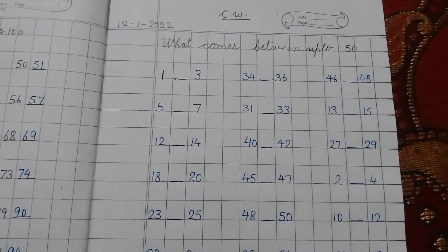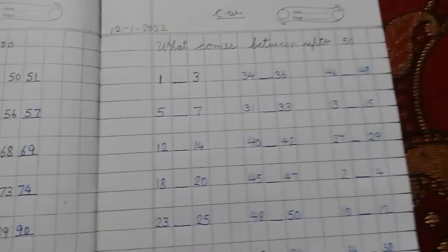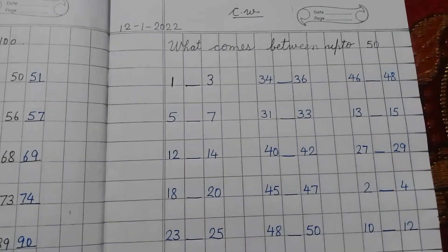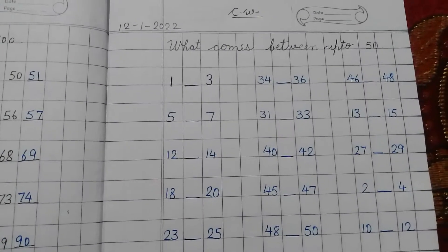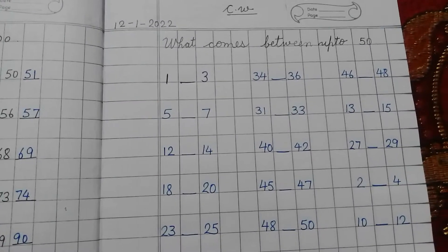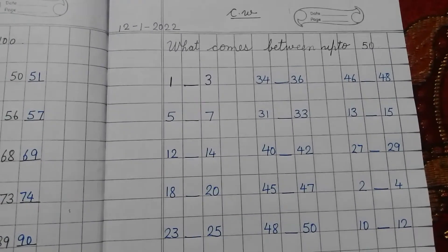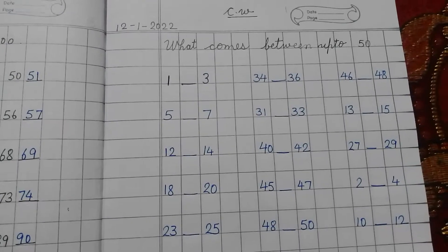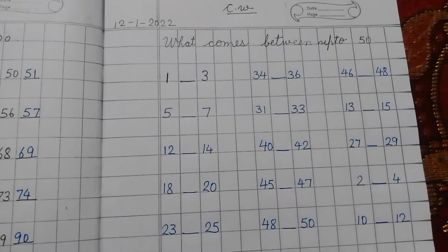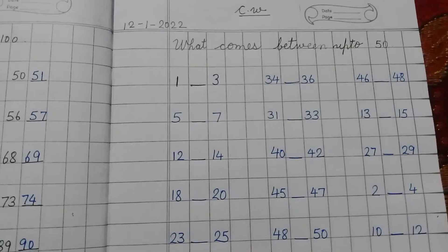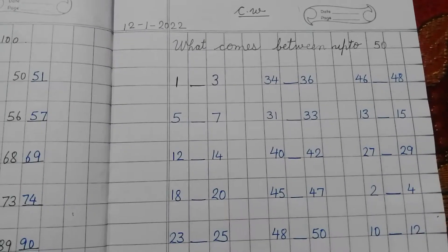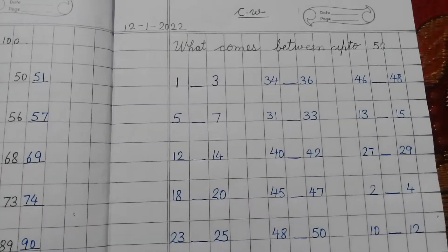In today's class we will learn what comes between, up to 50. We have learned in our previous classes what comes before and what comes after up to 100, and what comes before up to 30. So in today's class we will learn what comes between, up to 50.